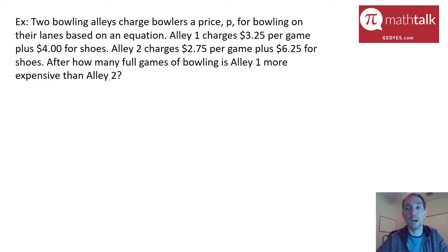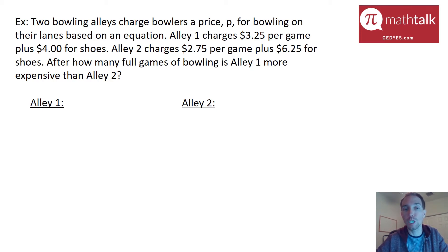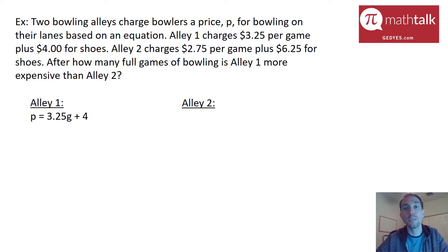The first step is to find the equations for each alley. Alley one charges $3.25 per game — let's call it G — plus $4 for shoes, so P equals 3.25G plus 4. Alley two is $2.75 per game plus $6.25 for shoes, so P equals 2.75G plus 6.25.